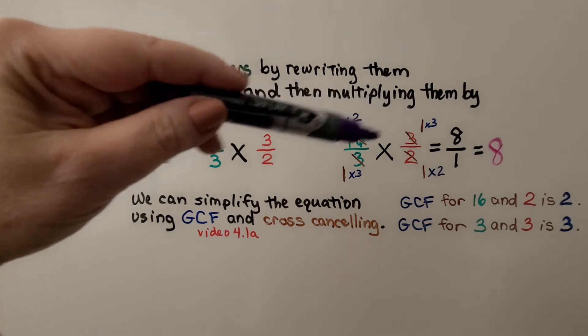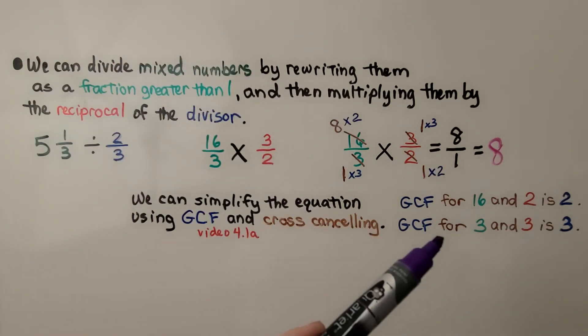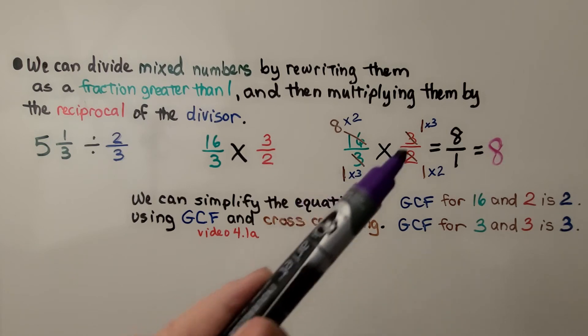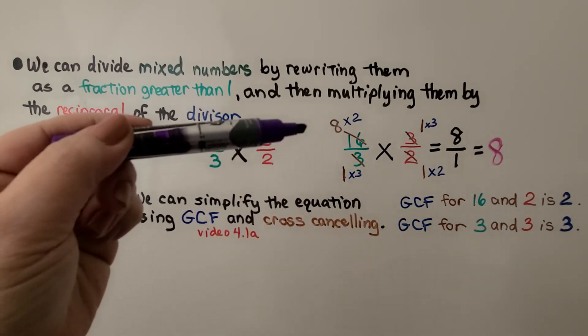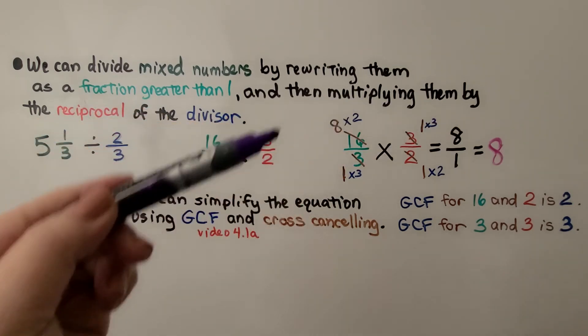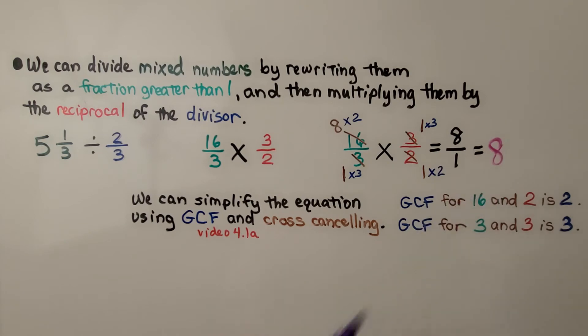Going this way for cross-canceling, we have 3 and 3, so they both cancel out as 1s. Now we multiply: 8×1 is 8, 1×1 is 1, and 8/1 equals 8.